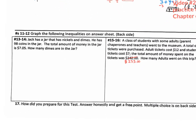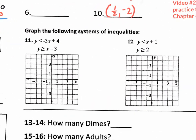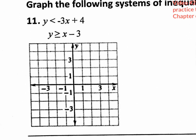Now, right here on the test it says for 11 and 12, graph the following inequalities on the answer sheet, the back side. It should say graph the following systems of inequalities, because we actually do have systems right here that we need to graph.